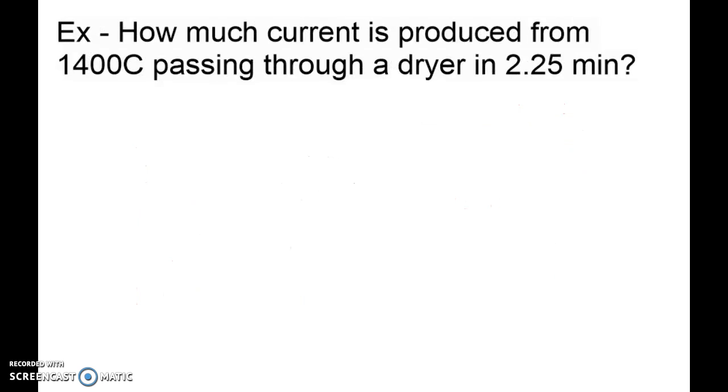So with our first question here, it's going to ask us how much current is produced from 1400 C's passing through a dryer in 2.25 minutes. So let's list what we know. We know that our time is equal to 2.25 minutes.